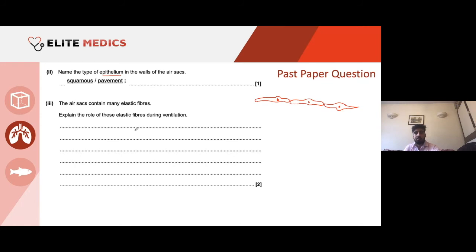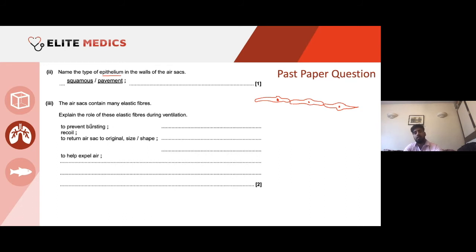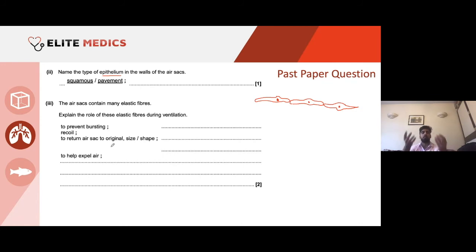The air sacs contain many elastic fibres — explain their role. They stretch when you breathe in, and when you breathe out they recoil, forcing air out. Also, they prevent bursting — if there were no elastic fibres and the alveolus had a fixed shape, as air pressure builds it couldn't accommodate the increased volume. So elastic fibres allow the sac to stretch and then recoil to its original size, helping force air out. Because you're going against gravity, moving air upwards out through the mouth and nose, this extra boost from recoiling elastic fibres is needed.